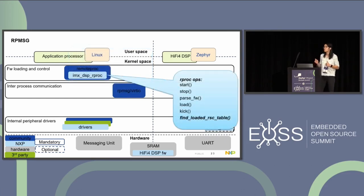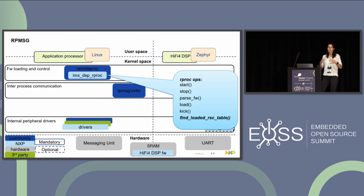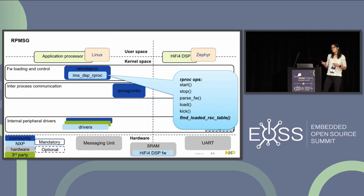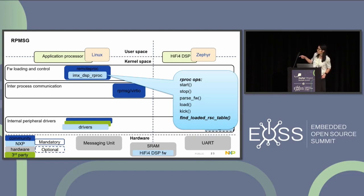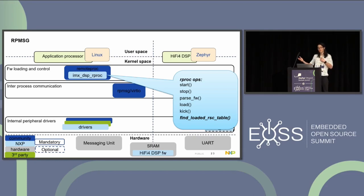The resource table must be in a specific section in the linker script, because the Remote Proc framework on Linux also looks for this resource table — it allocates the memory mentioned in it, loads the virtio and RPMSG framework, and allocates trace buffers if needed. Therefore, we must implement the find_loaded_rsc_table callback. Otherwise, the resource table won't be found, the ring buffers won't be allocated, and communication between the cores will not work.